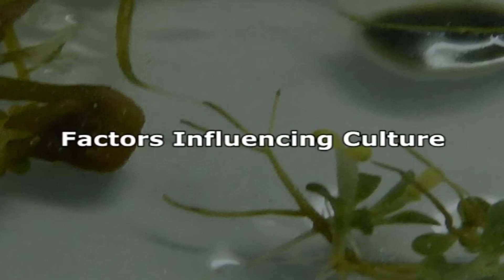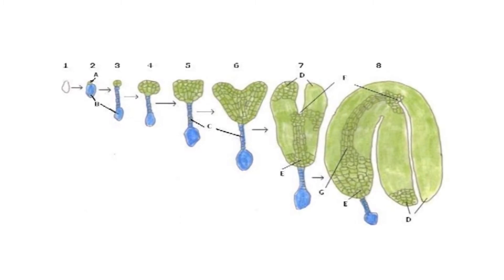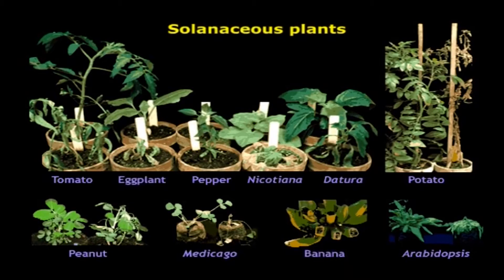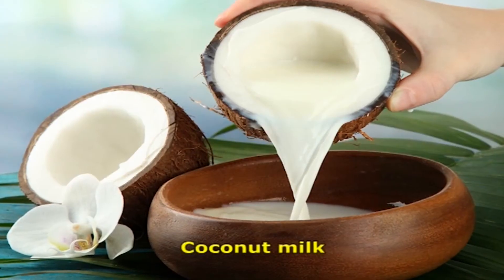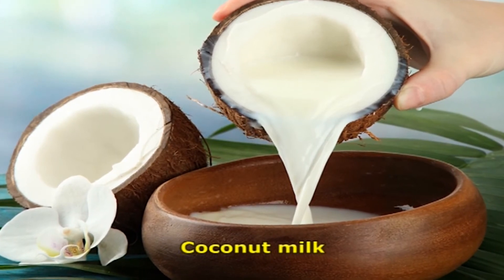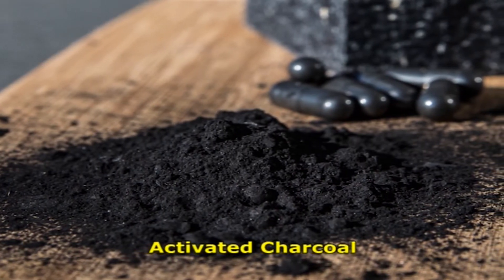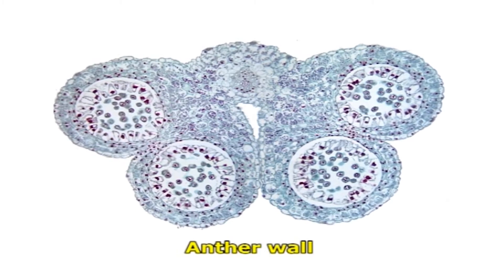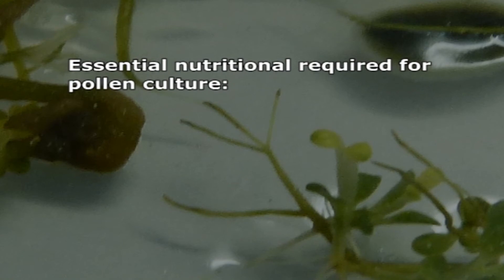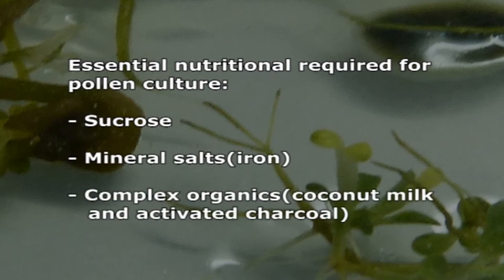The factors influencing the growth of anther and pollen culture include: mineral salts, which are needed for growth past the globular stage of embryo development; in early stages, minerals may be supplied by the anther wall itself. Iron is particularly critical in solanaceous plants. Additional organics are not required for some species, while other plant species may require complex organics such as coconut milk. Activated charcoal is often used since it increases the frequency of cultured anthers. Essential nutritional requirements during pollen culture include sucrose, mineral salts like iron, complex organics like coconut milk, and activated charcoal.